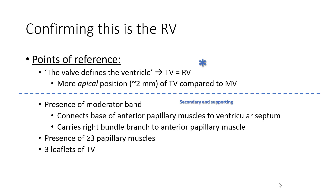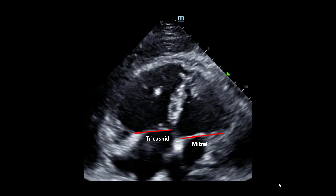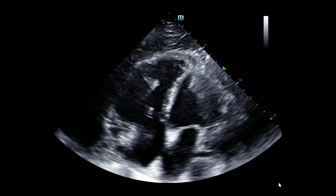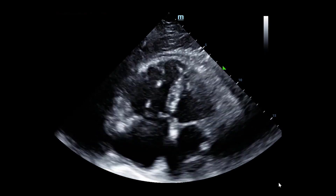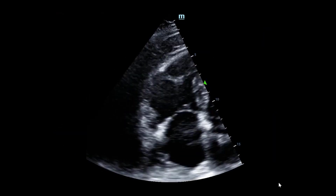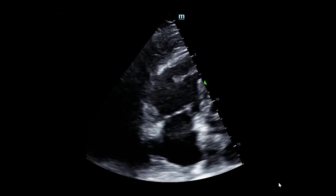Our key learning point is that the valve defines the ventricle — specifically, the more apical position of the tricuspid valve compared to the mitral valve. Secondary and supporting criteria for more advanced echo include the presence of a moderator band, greater than or equal to three papillary muscles, or three leaflets of the tricuspid valve. Both the right atrium and left atrium appeared dilated, suggesting this could be more of a chronic process. Here is a more RV-focused view of the apical four chamber.